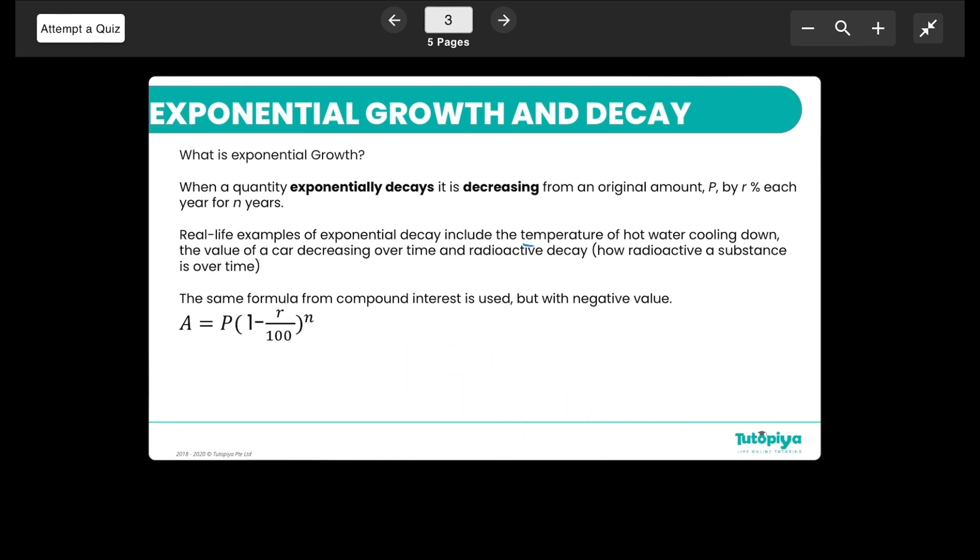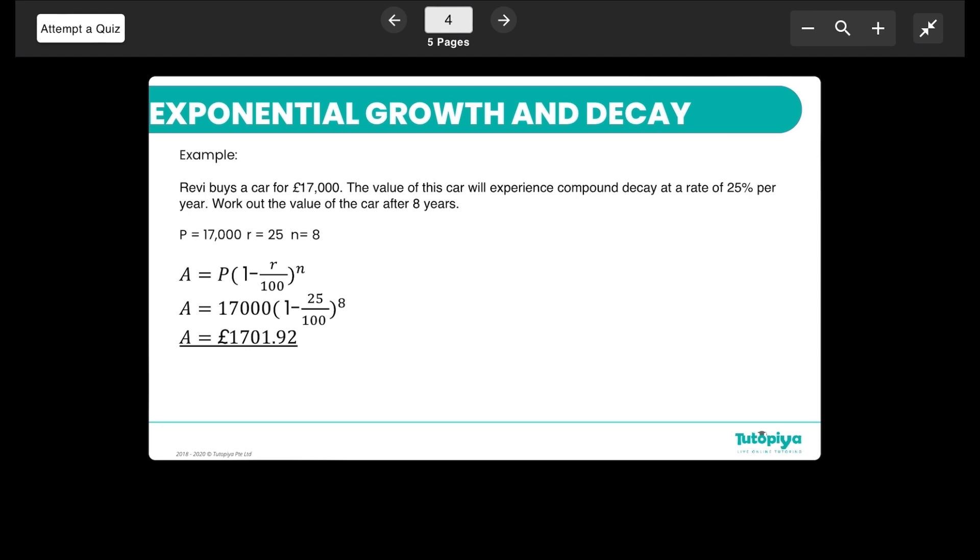In this case the examples that we look at include temperature of hot water cooling down, value of a car decreasing over time, or even something as simple as radioactive decay. These are examples of exponential decay. Coming to the example, we have Revvy who is buying a car for £17,000 and this value will experience compound decay at a rate of 25% per year.